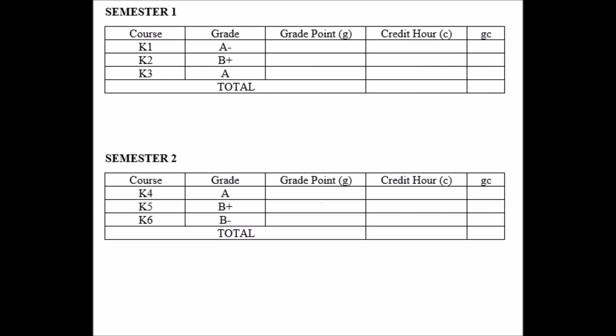Now let's assume that this is the result slip of someone studying for 2 semesters, and for each semester this person takes 3 subjects, with grades as shown in the result slip. What we need to do is transfer the grade into the corresponding grade point using the conversion table earlier, and also determine the credit hour for each of the subjects. After filling these in, we can calculate the product of the grade point and credit hour for each subject — referred to as GC here — and also calculate the total credit hour and total GC for each semester.